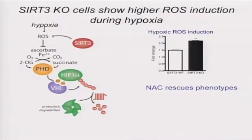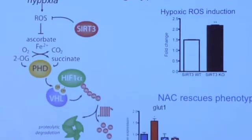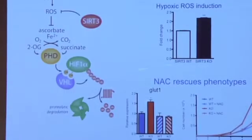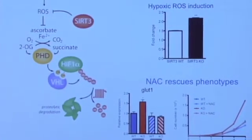We tested the model that SIRT3 loss regulated ROS, which would then regulate PHD activity. Hypoxia induces ROS levels, and with SIRT3 loss we saw a greater induction of ROS. To test whether ROS was responsible for HIF stability in SIRT3 knockout cells, we rescued that by the addition of N-acetylcysteine antioxidant. NAC addition normalized glycolytic gene expression in knockout cells, as well as normalized the growth rate in knockout cells.